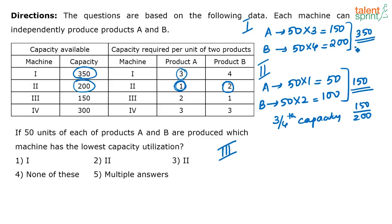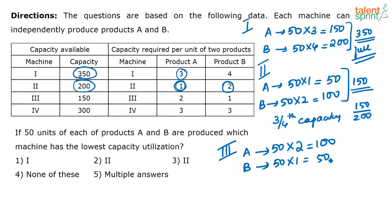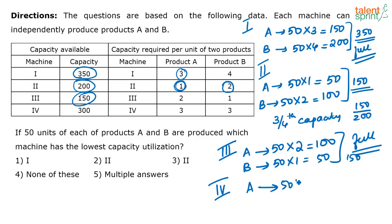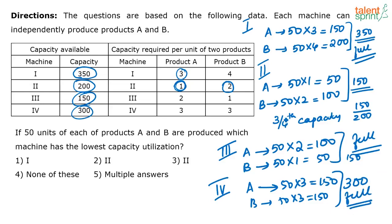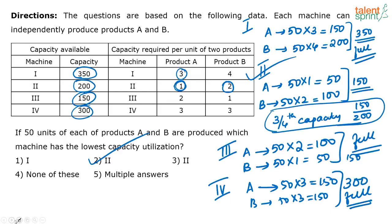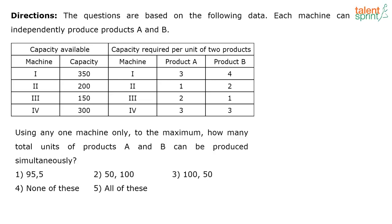For machine one, full capacity is used. For machine three, product A needs 50 × 2 = 100 and product B needs 50 × 1 = 50, totalling 150 - which equals machine three's full capacity. For machine four, A is 50 × 3 = 150 and B is 50 × 3 = 150, totalling 300, which is again the full capacity. The only machine utilizing less than full capacity is machine two, so the correct answer is machine two.